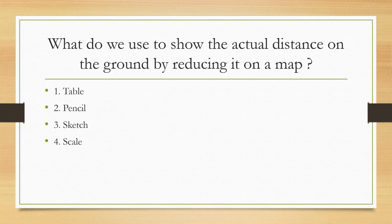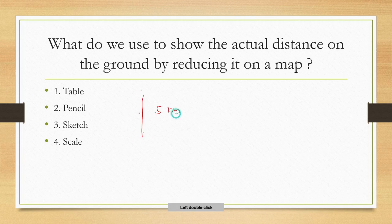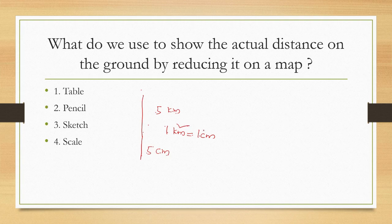Next question: what do we use to show the actual distance on the ground by reducing it on a map? For example, if a distance is 5 kilometers on the ground, on the map we represent it as 5 centimeters — so 1 kilometer equals 1 centimeter. We are reducing the actual distance to a lesser measurement. This is called scale. Scale is the measurement used for drawing a map.